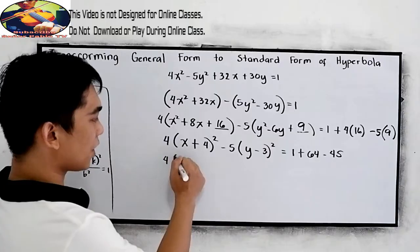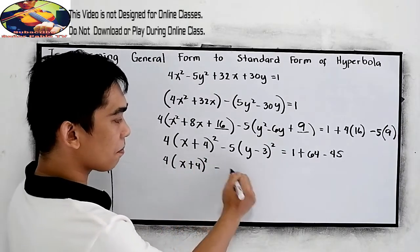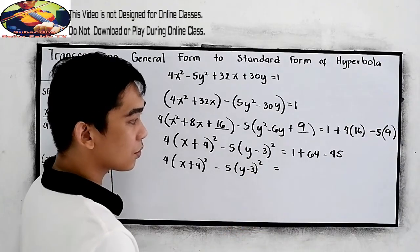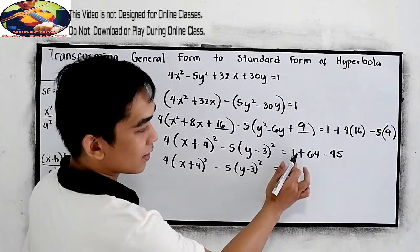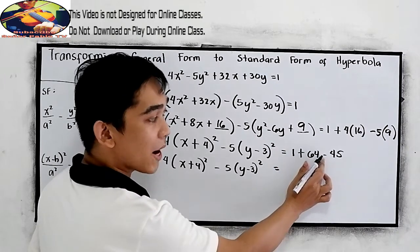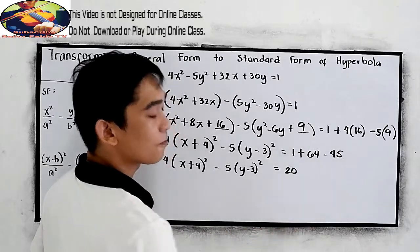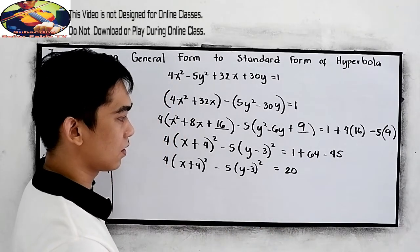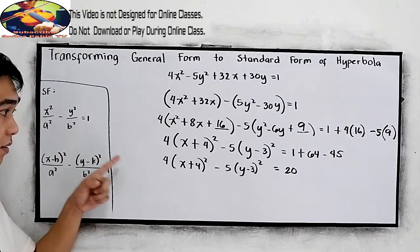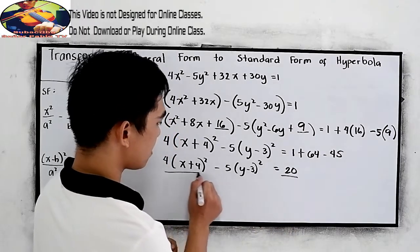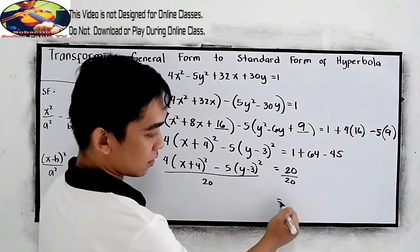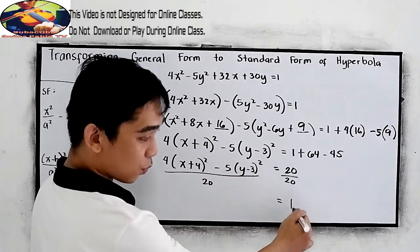So, simplify. We copy 4x plus 4, raise to 2, minus 5y minus 3, raise to 2 is equal to 1 plus 64 minus 45, which is 20. In our standard form, it must be equal to 1. So, we need to divide by 20 on both sides. This is now equal to 1.